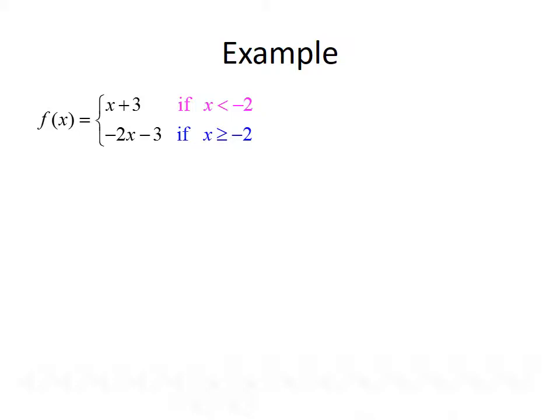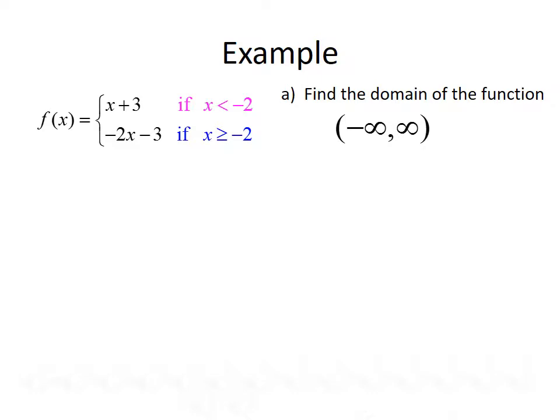Let's look at another example. Our piecewise defined function is f of x equals x plus 3 if x is less than negative 2, and negative 2x minus 3 if x is greater than or equal to negative 2. First, find the domain. Since x can be less than negative 2 or greater than or equal to negative 2, there is no lower or upper bound, so the domain is all real numbers from negative infinity to infinity.